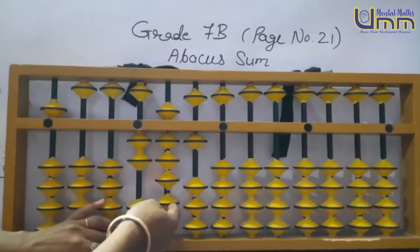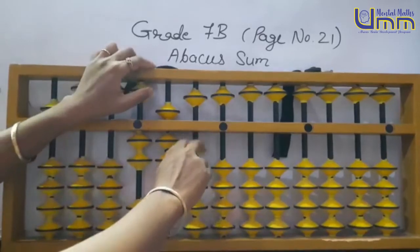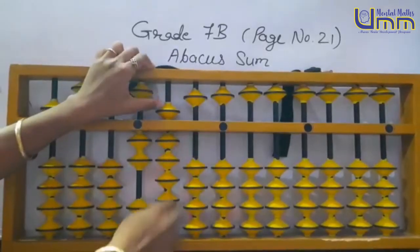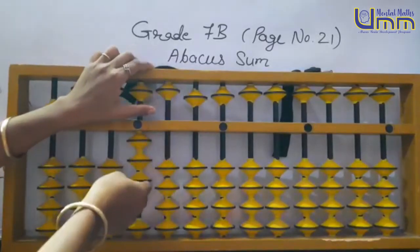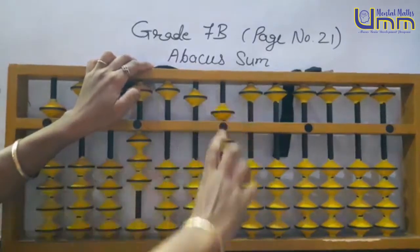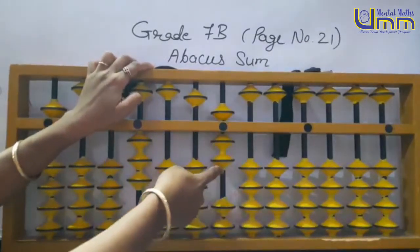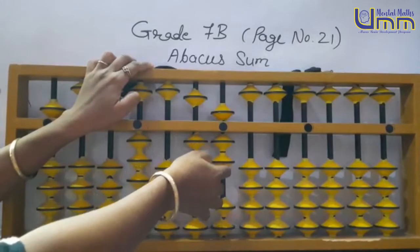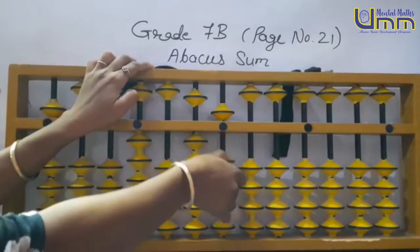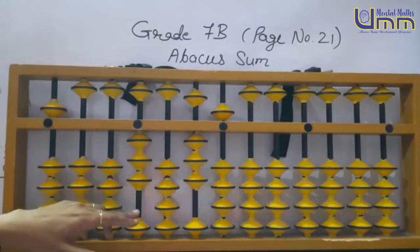3 minus 7 plus 10. Then 197: 1, 90 minus 1 plus 10 plus 10, 8 plus 10, 7 directly. Then 28: 20 directly, 8 minus 2 plus 10. First answer is 335.